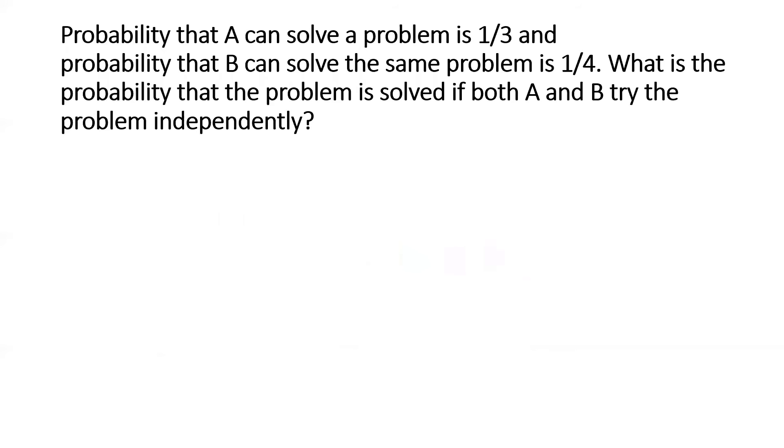Now, next consider a similar problem, which we can actually solve using the same strategy of going for the complement of the problem first rather than the problem itself. This particular probability problem states that probability that A can solve a problem is one third, probability that B can solve the same problem is one fourth. What is the probability that the problem is solved if both A and B try the problem independently?